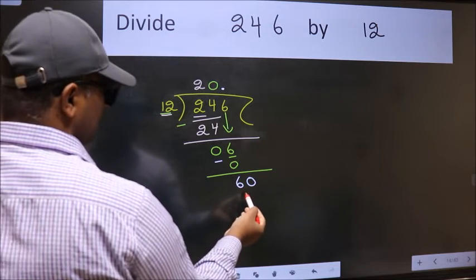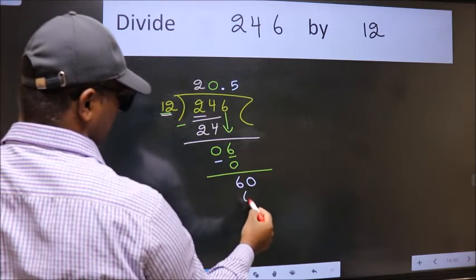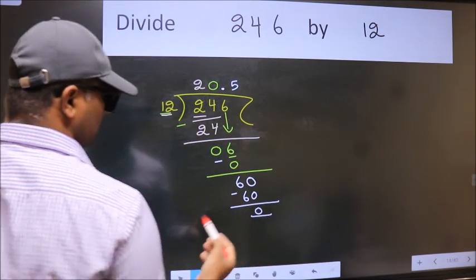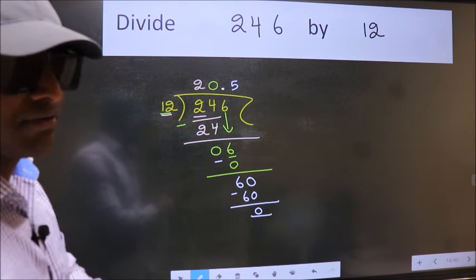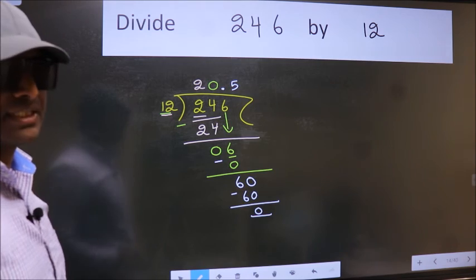So 60. When do we get 60 in the 12 table? 12 times 5 is 60. Now we subtract. We get 0. Did you understand where the mistake happens? You should not make that mistake.